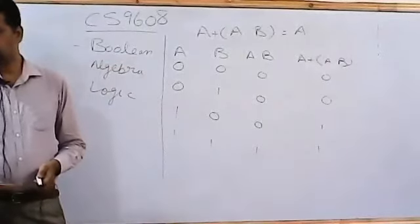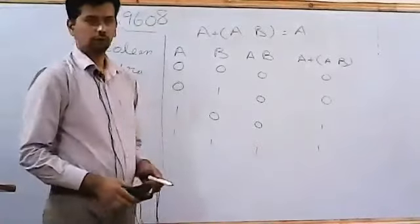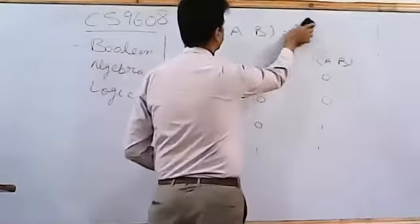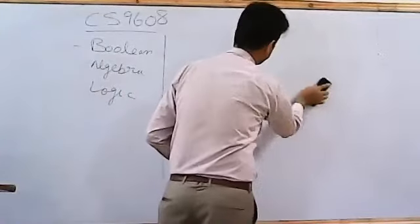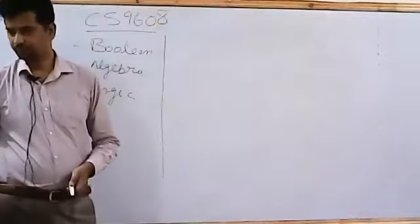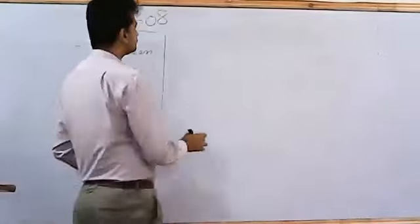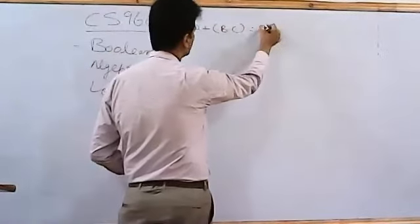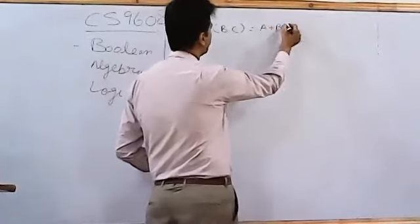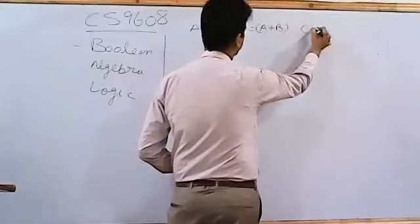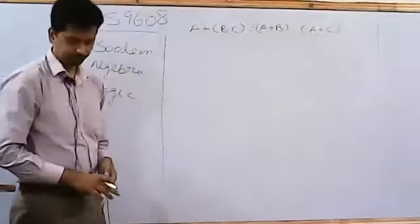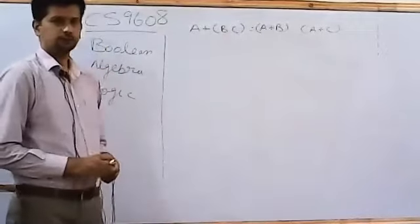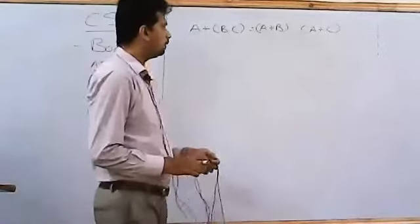I am going to do one more for you, that is distributive law, and then I would leave the rest of the identities for you to explore on your own. The AND form of distributive law actually states that A plus B dot C is equal to A plus B dot A plus C. Now, that is the AND form of distributive law. Let's try and prove that.